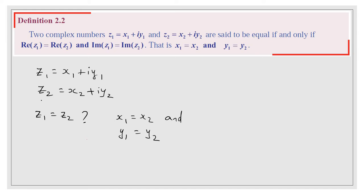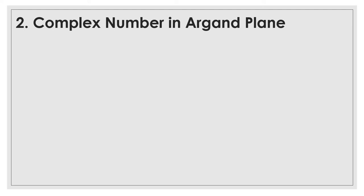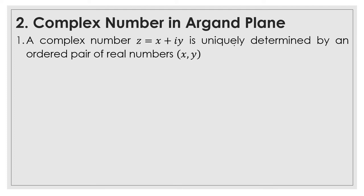The second one: complex number in the argand plane. A complex number z equal to x plus iy is uniquely determined by an ordered pair of real numbers. We can be able to plot this one. Example: 3 minus 8i — 3 is a real number and minus 8 is a real number. So the real part first, that is 3, which is the x-coordinate, comma, then minus 8, the coefficient of i, which is the imaginary part. Both 3 and minus 8 are real numbers.